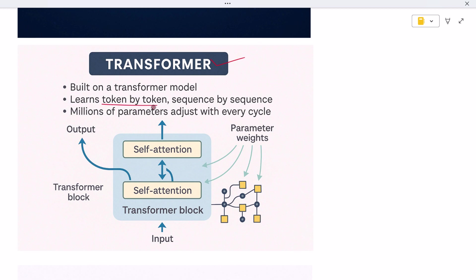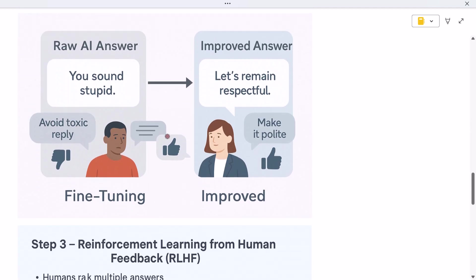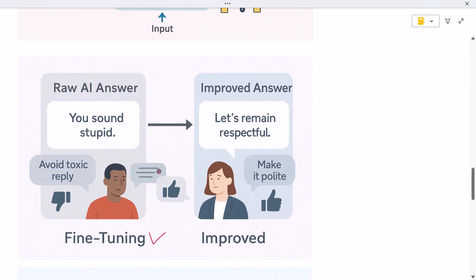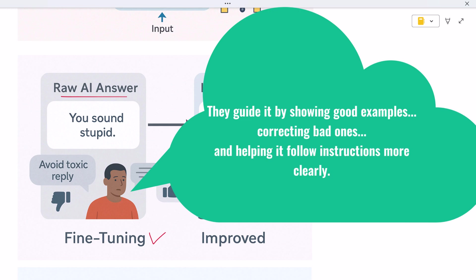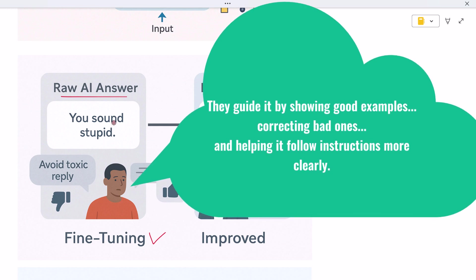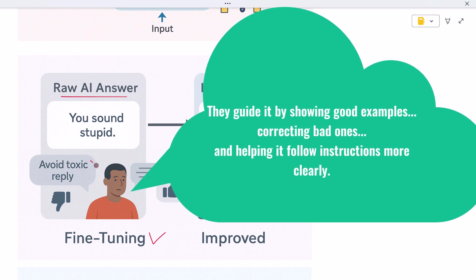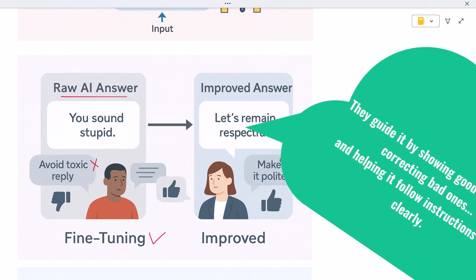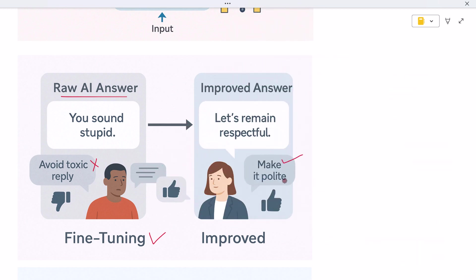But just learning patterns isn't enough. So once pre-training is done, there's another phase called fine-tuning. This is where human reviewers step in. They take the raw model and help shape it to be more useful, more helpful, and safer. They guide it by showing good examples, correcting bad ones, and helping it follow instructions more clearly. This is how the model learns to be polite, to avoid toxic replies, and to follow your prompts accurately.